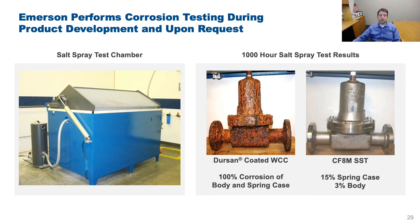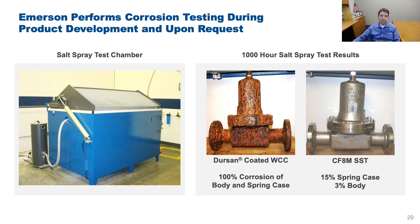To close, I'll highlight two areas where Emerson can help mitigate corrosion risks. First, we can perform corrosion testing in our McKinney lab upon request. Using our salt spray test chamber, we tested the Fisher MR95 pressure regulator — commonly used in oil and gas applications. On the left is a WCC steel unit with a coating; on the right is the same unit in CF8M stainless steel. After 1,000 hours of salt spray testing, the photos speak for themselves to illustrate how important material selection is in corrosive environments.